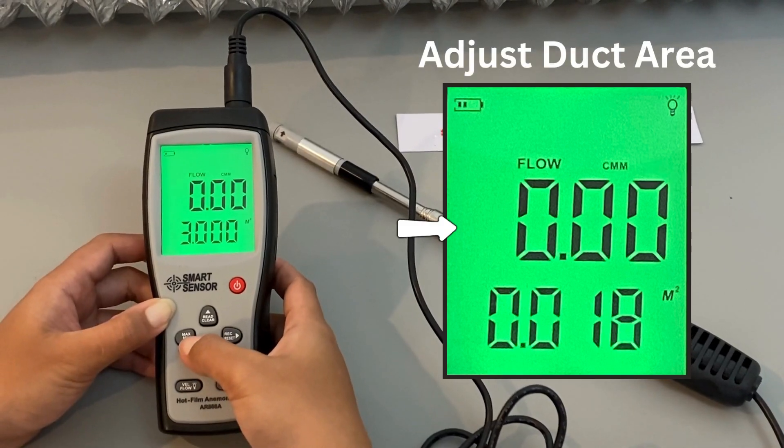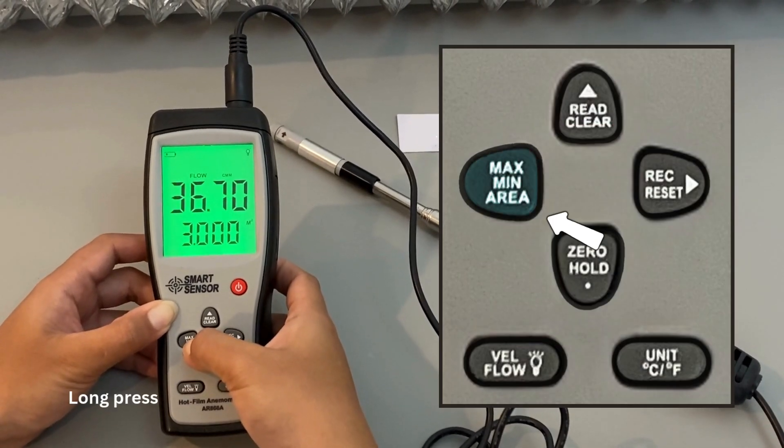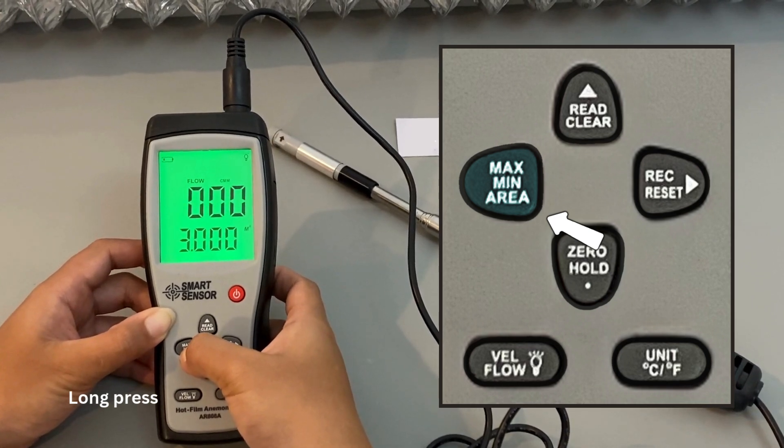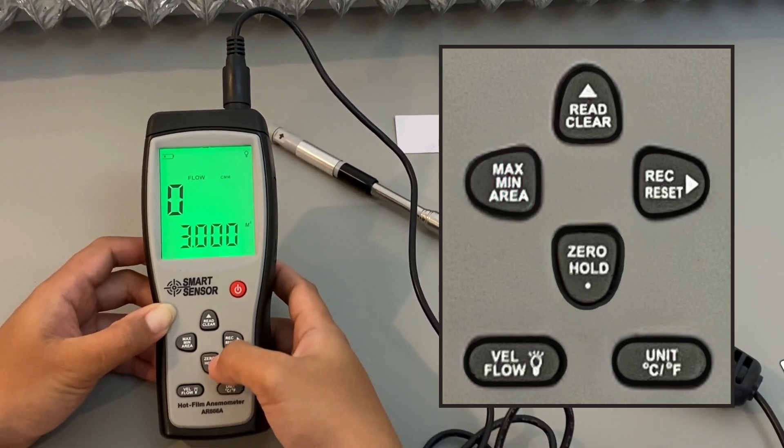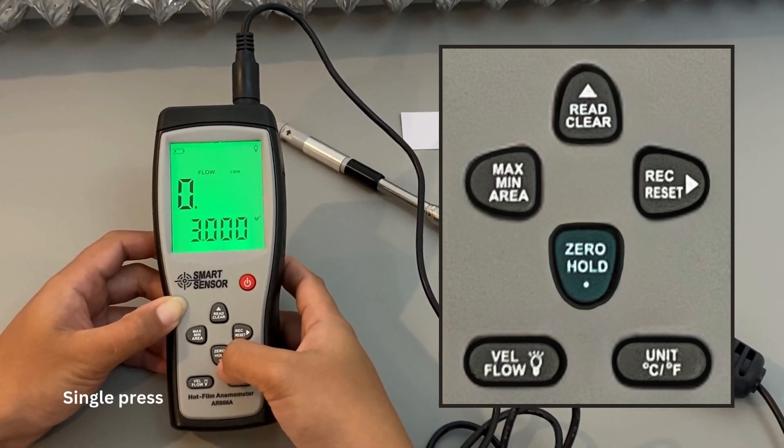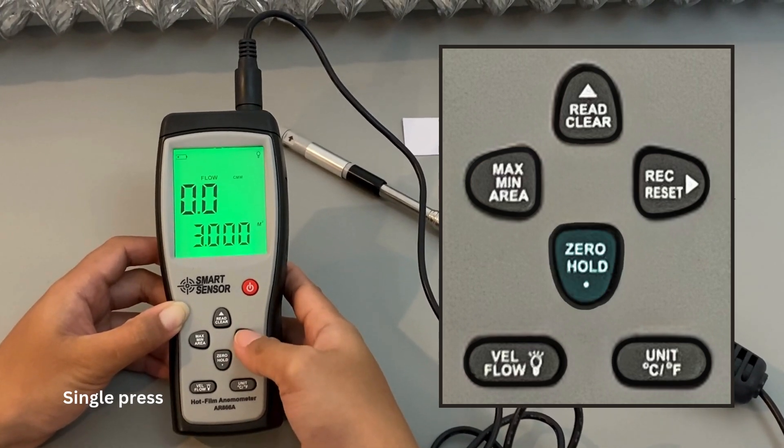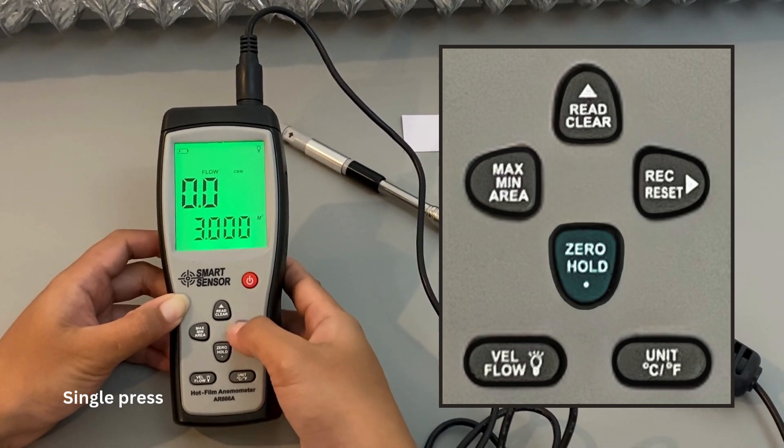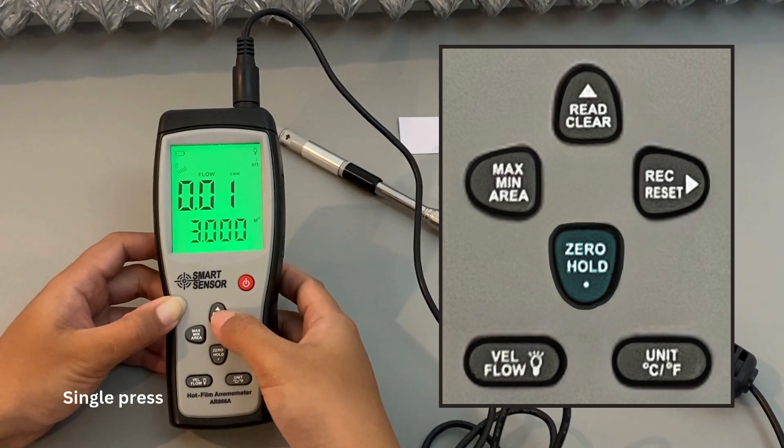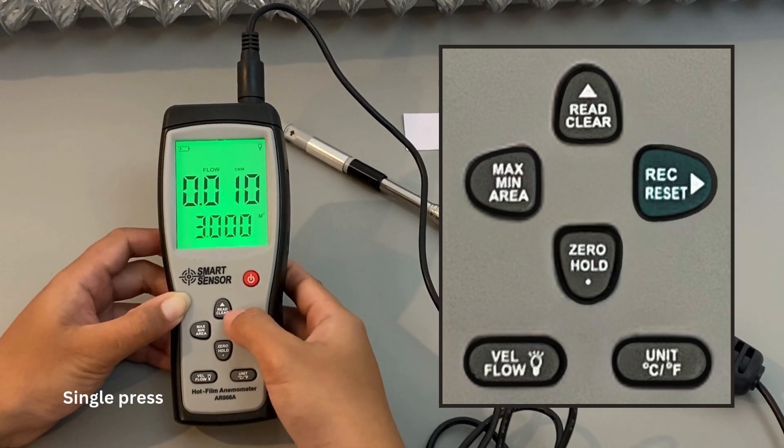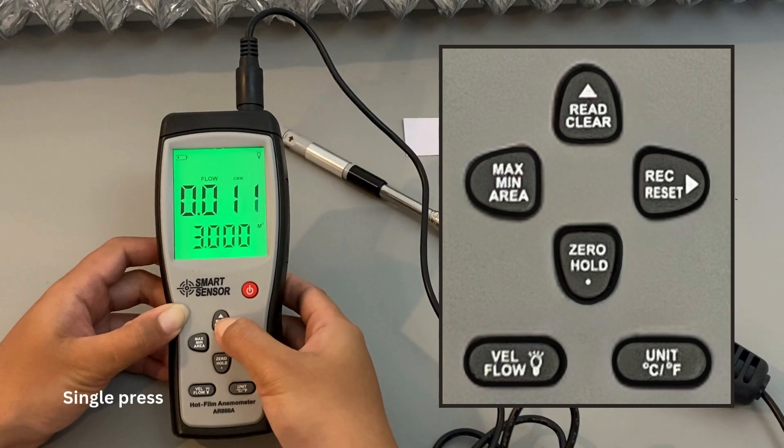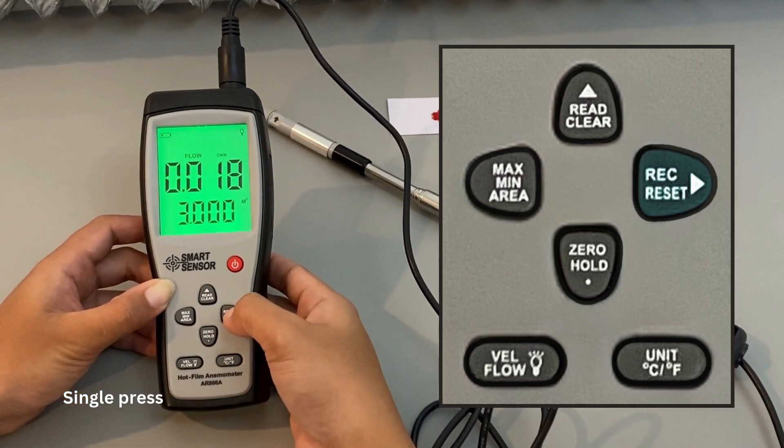Next, we will adjust the duct area. Press and hold the area button for three seconds to enter editing mode. Now, use the up and down buttons to adjust the duct area value to your desired number. If you need to add a decimal point, simply press the period button. Once you have entered the correct area value, press the reset button to set the value. And when you're done, press reset again to return to the main display.